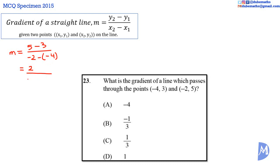To subtract a negative number is the same as adding a positive number with the sign reversed, so adding positive 4, we get 2/(-2 + 4) = 2/2 = 1. The gradient equals 1. The answer is D.